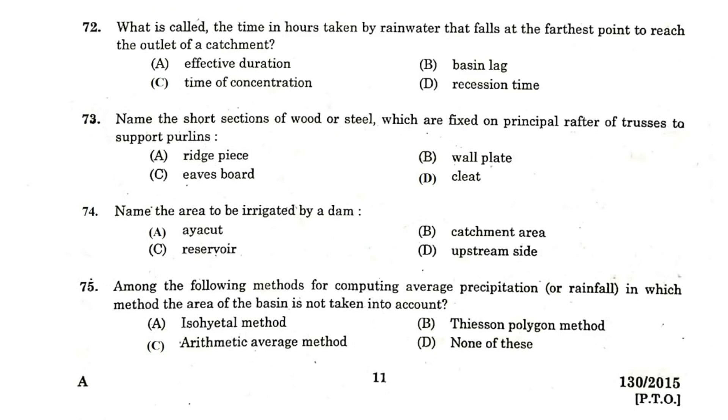What is called the time in hours taken by rain water that falls at a farthest point to reach the outlet of a catchment? Time of concentration. Name the short sections of wood or steel which are fixed on principal rafters of truss to support purlins. Cleat. Name the area to be irrigated by a dam. Ayakut. Among the following methods for computing average precipitation in which method the area of basin is not taken into account. Arithmetic average method.